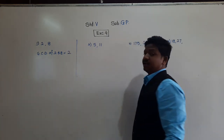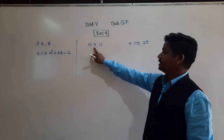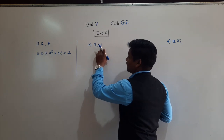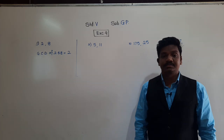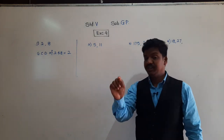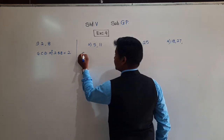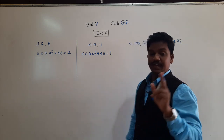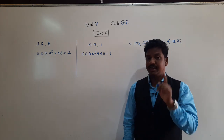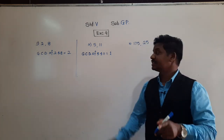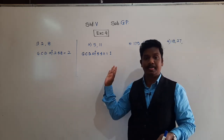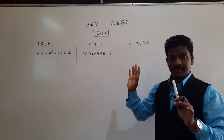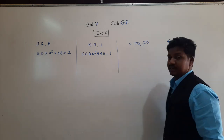Now, 5 and 11. The smaller number is 5. Is 11 in the table of 5? No. Now, 5 and 11 are both prime numbers. When both given numbers are prime, their GCD will be 1, because there will be no other common factors except 1. Since 1 is a factor of all numbers, the GCD of 5 and 11 is 1. This is another trick for finding GCD when both numbers are prime.